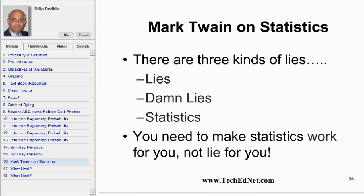Lies, damned lies and statistics is part of a phrase attributed to Benjamin Disraeli and popularized in the US by Mark Twain. According to him there are three kinds of lies: lies, damned lies, and statistics. The statement refers to the persuasive power of numbers, the use of statistics to bolster weak arguments, and the tendency of people to disparage statistics that do not support their positions. You need to make statistics work for you, not lie for you.